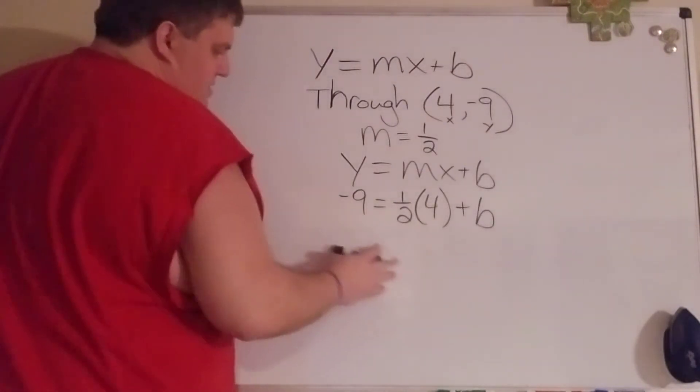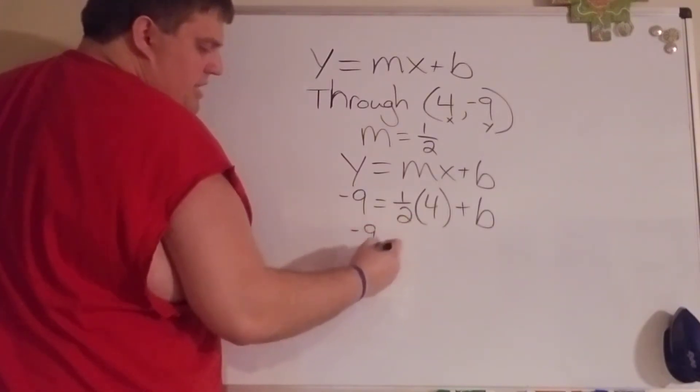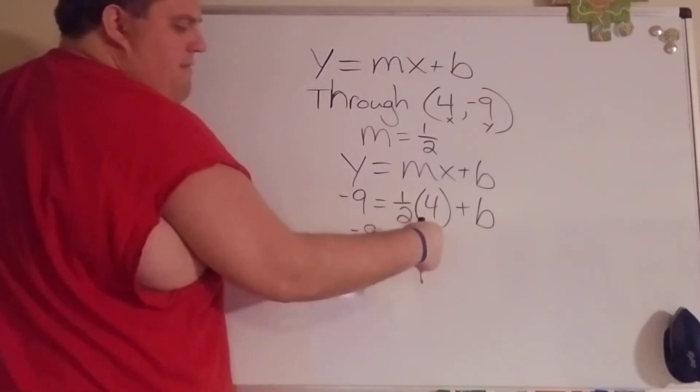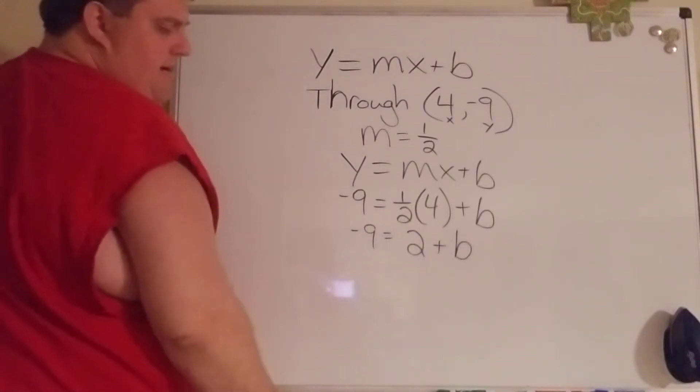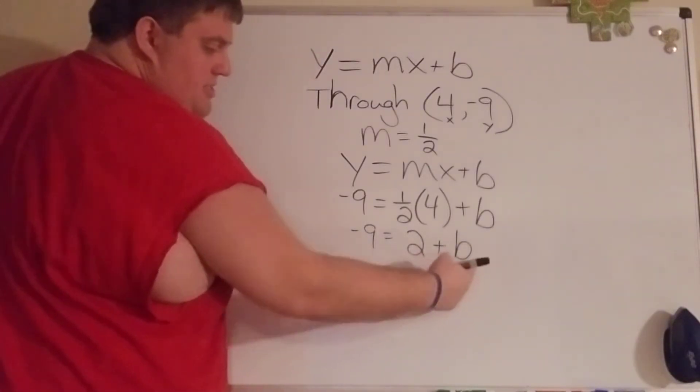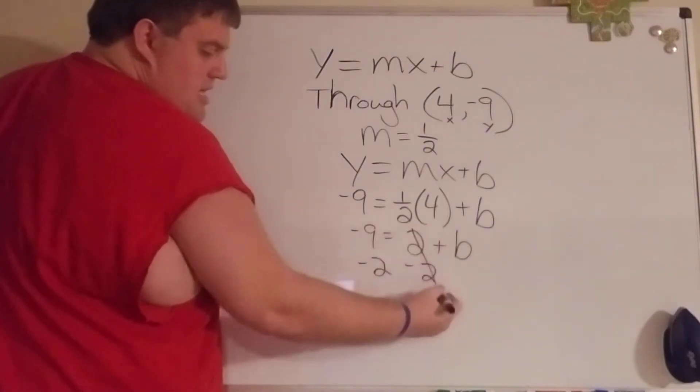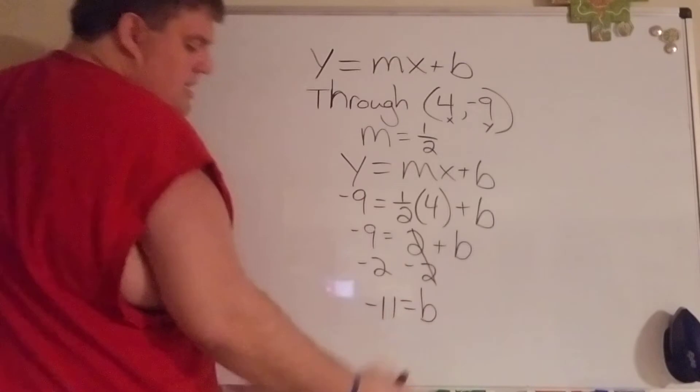So y is negative nine, the slope here is one half, remember that means if it's a fraction it's going to go up one over two. The x value here is four and we do not know what b is. Once I have it set up, the math is pretty easy. One half of four is just two. To get b by itself, we got to get rid of two, so minus two from both sides and it looks like b is negative eleven.